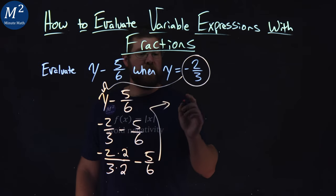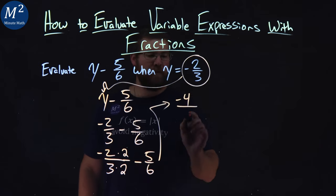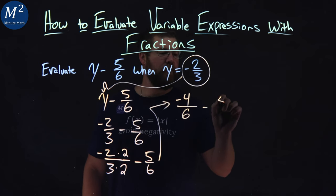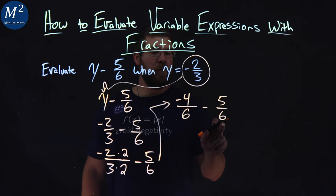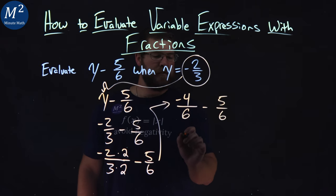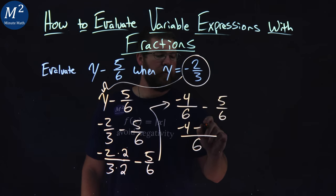From there, negative 2 times 2 is negative 4, over 3 times 2 is 6, minus 5 sixths. We have a common denominator, so we can combine the fraction. 6 is in the denominator, negative 4 up top minus 5.